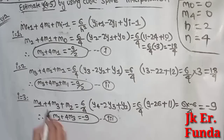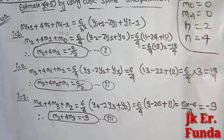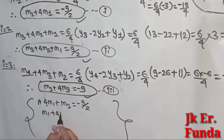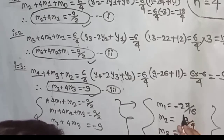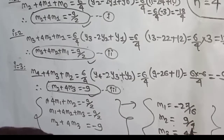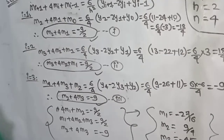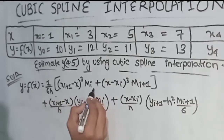Now we solve for the M values using the system of equations. We have three equations in M_1, M_2, M_3. Solving the system: M_1 equals minus 37 by 16, M_2 equals 9 by 4, and M_3 equals minus 45 by 16.